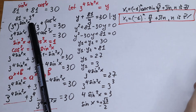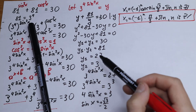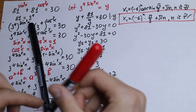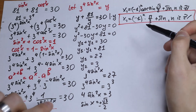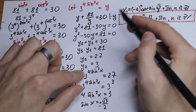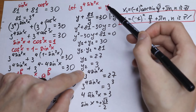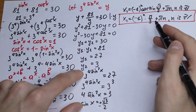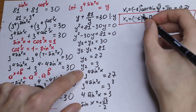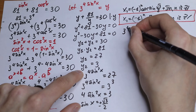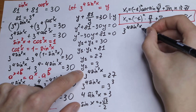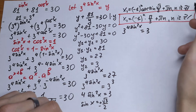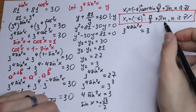Now let's find the second root, using our second value y₂ = 3. Recalling our substitution, 3 to the power 4sin²x = y, we now solve the equation with y₂. So we have 3 to the power 4sin²x equal to 3. With the same base, we equate exponents: 4sin²x = 1.